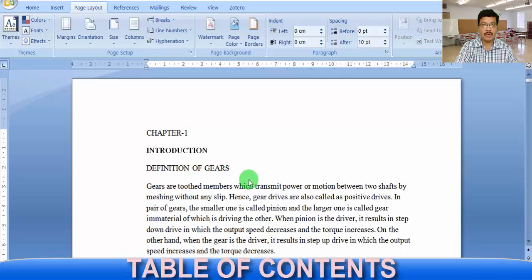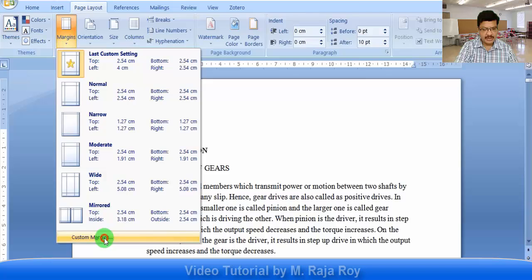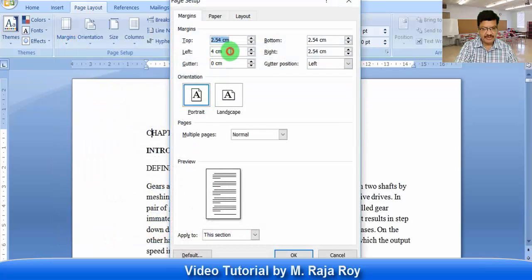In this video, I will explain how to do the text formatting and automatic content generation for your project work. The margins you have to consider are left side 4 cm, right side 2.54 and top and bottom 2.54. These are the standard margins.